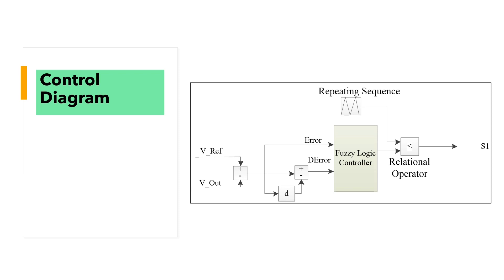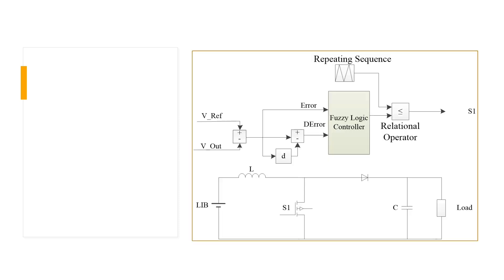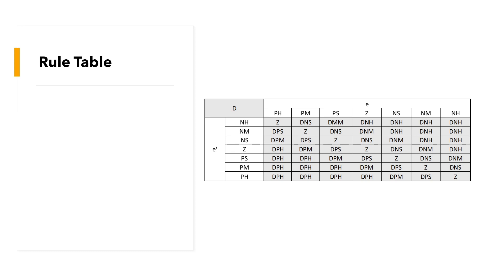The output of the repeating sequence and relational operator goes to the gate. The DC-DC Boost Converter gate receives the output of the relational operator.